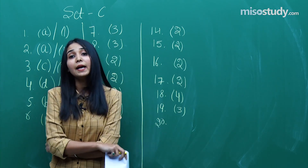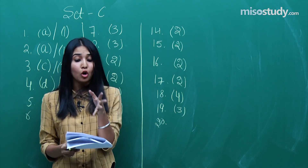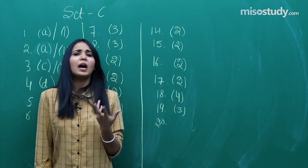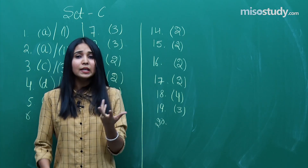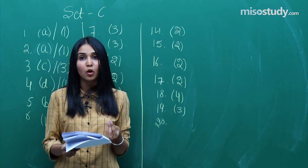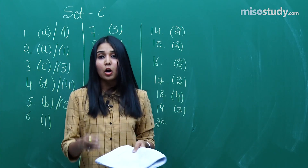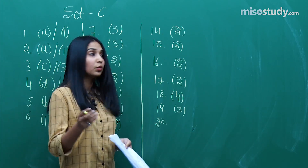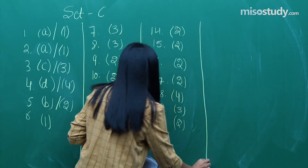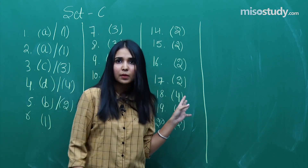Question number 20 was from hydrogen, specifically the concept of hard and soft water. It's not a very difficult part — we read about this in our NCERTs and study the basic reactions as well. The correct option for question 20 is option 2. Option 2 seems to be the examiner's favourite this time!